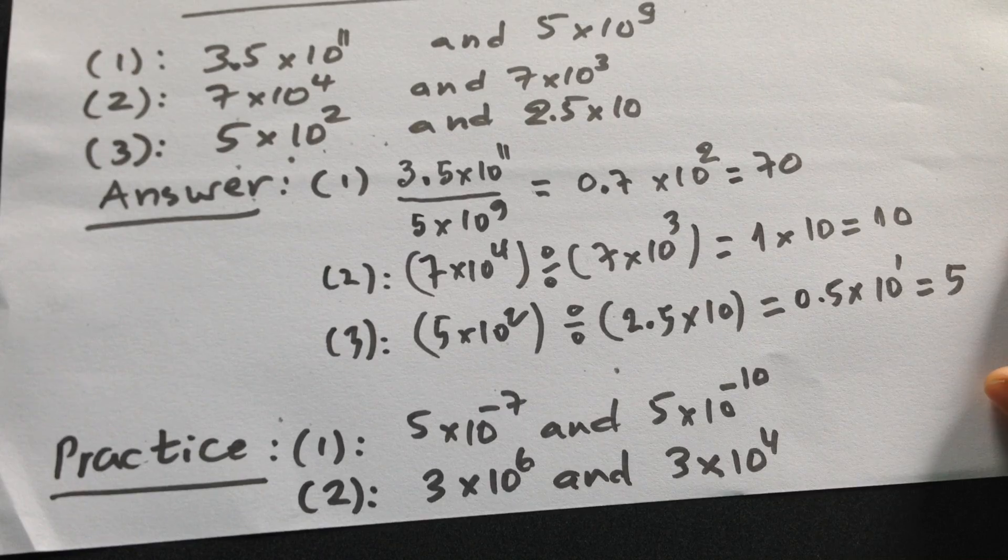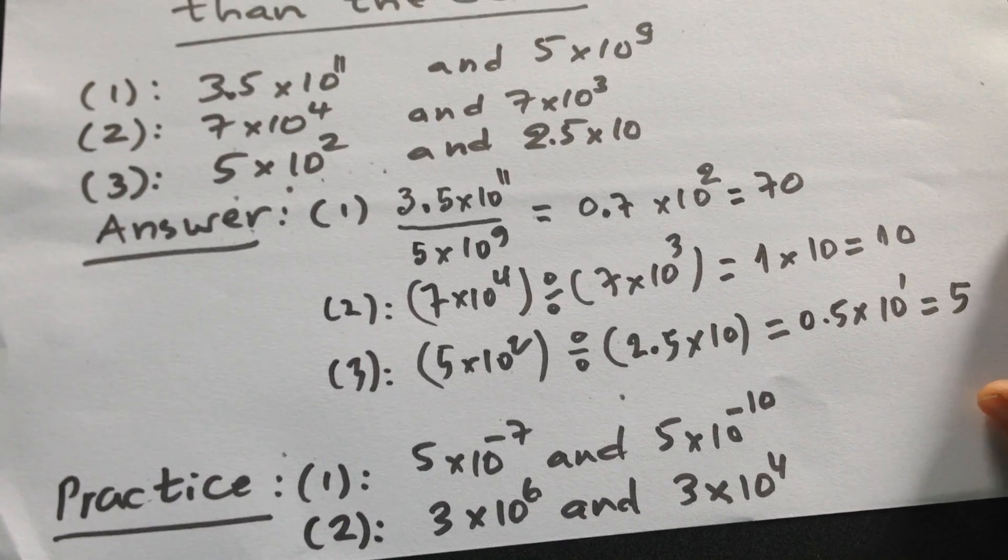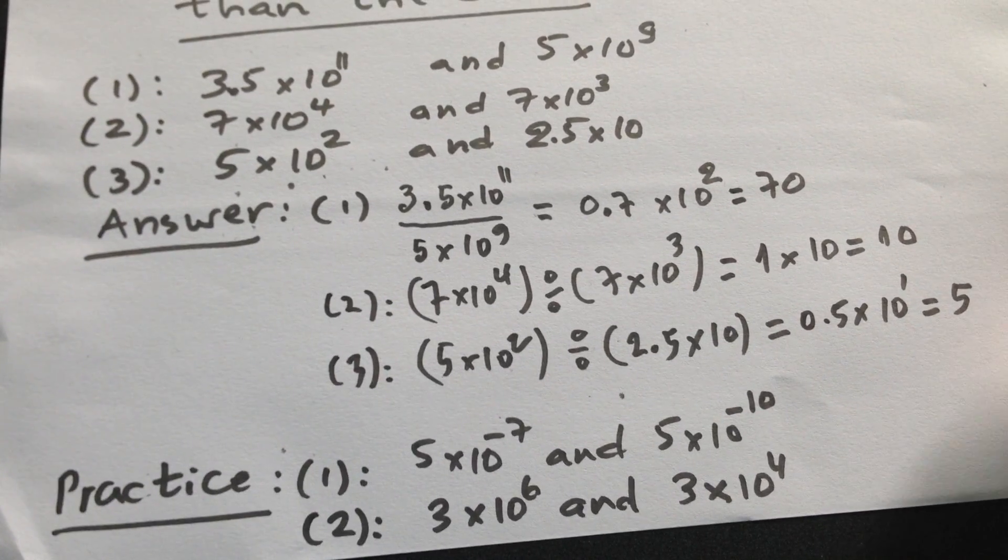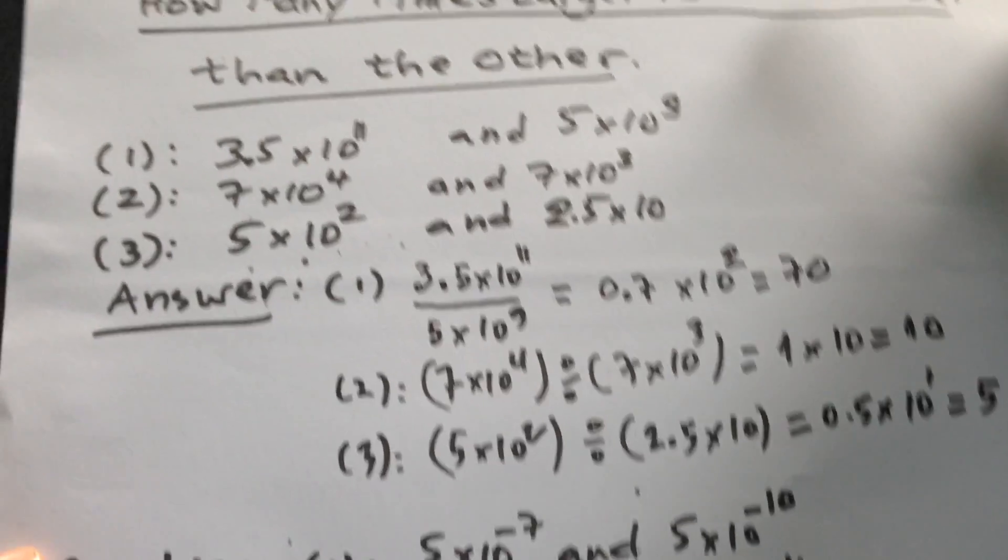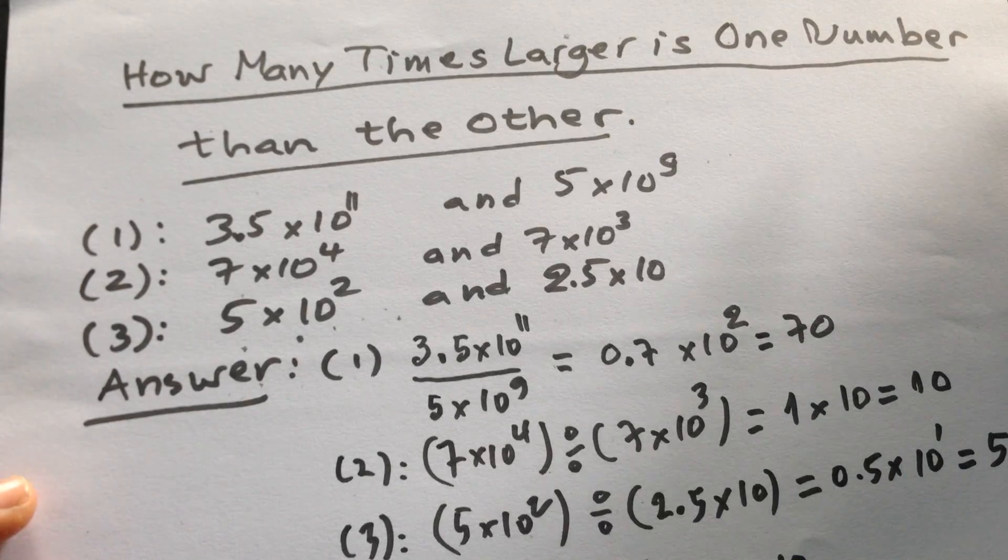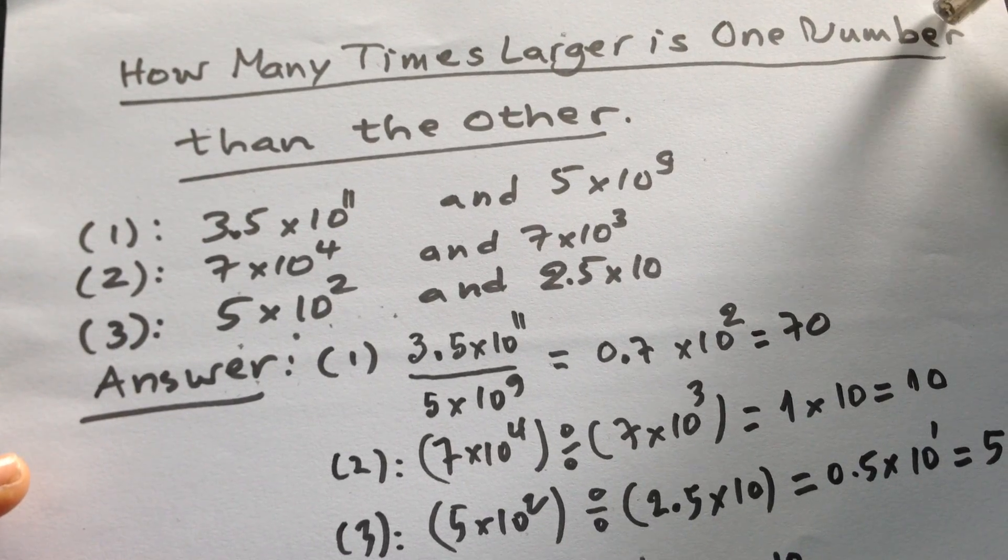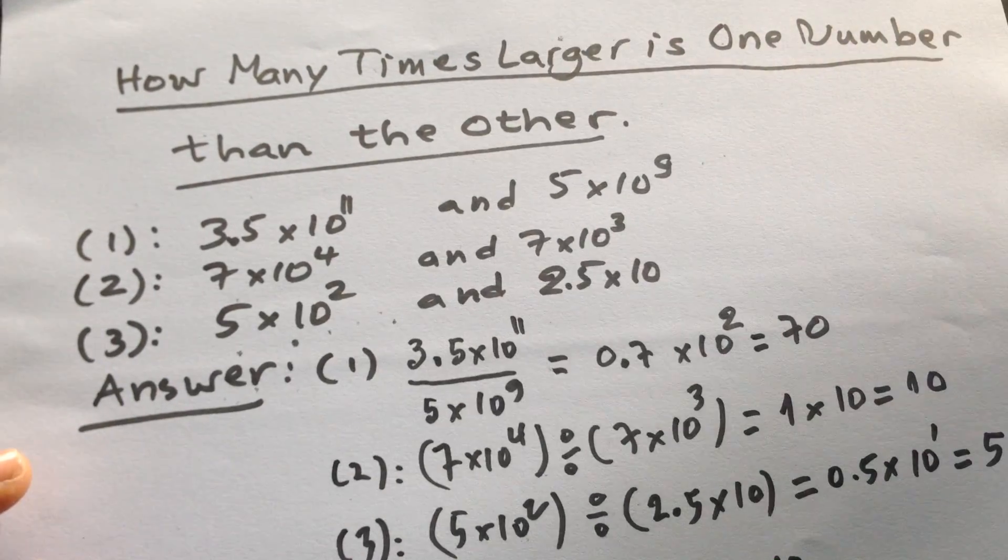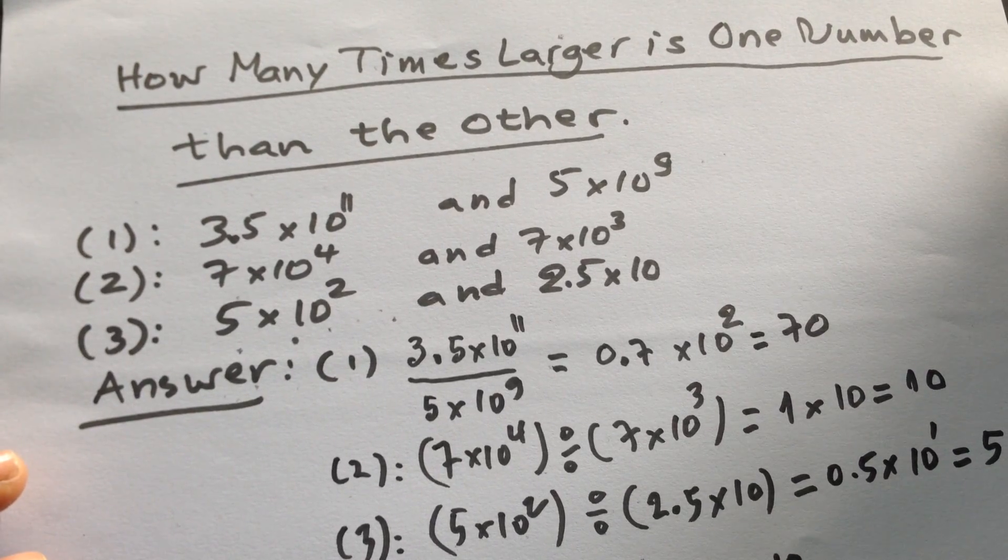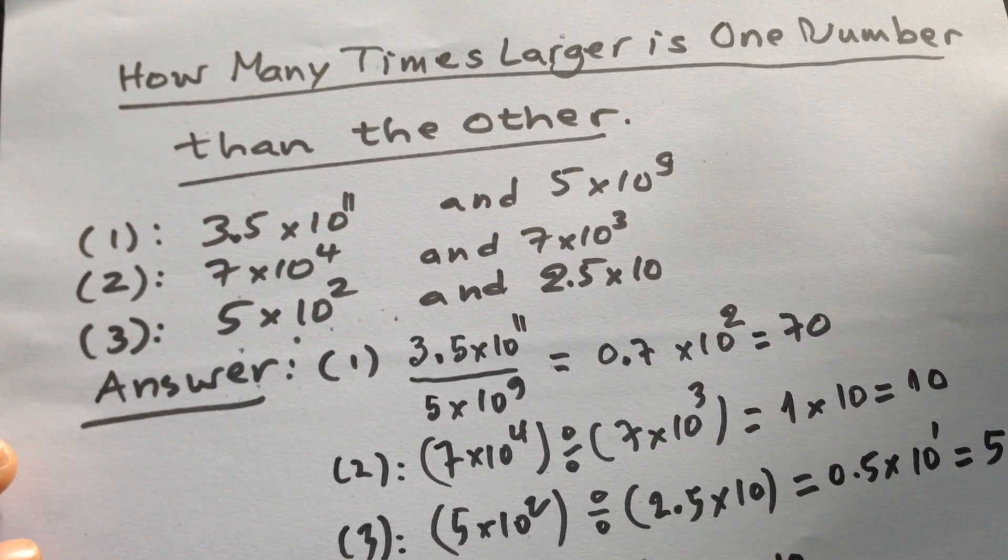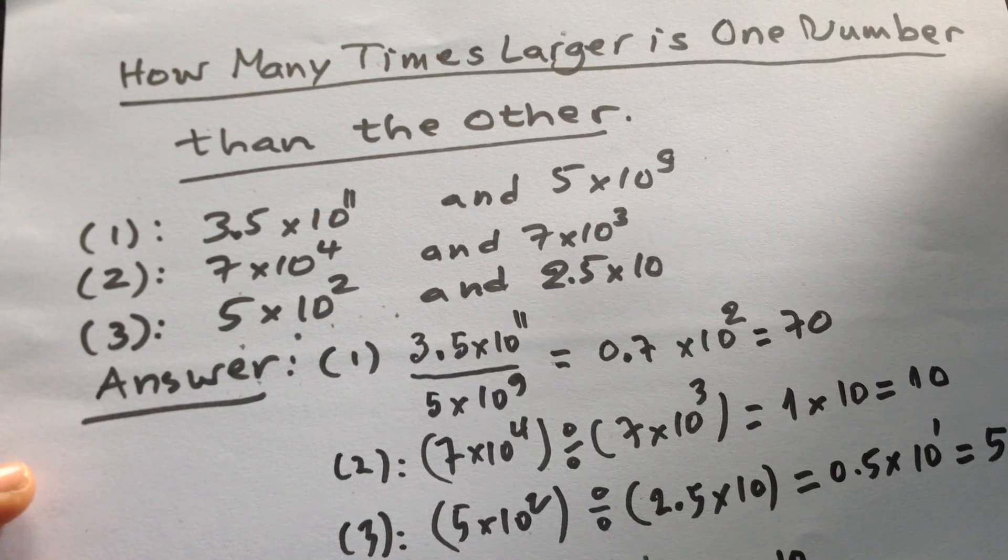3 times 10 to the power 6 and 3 times 10 to the power 4. So if you can do this, you can understand how to compare how many times one number is to the other numbers.